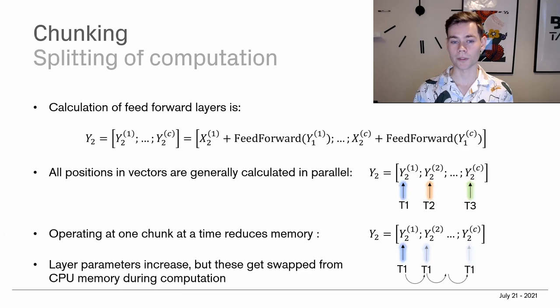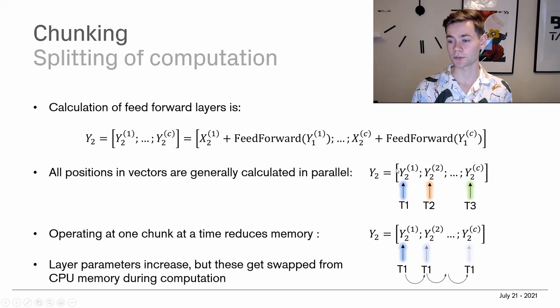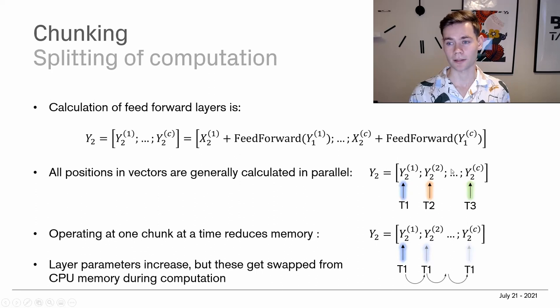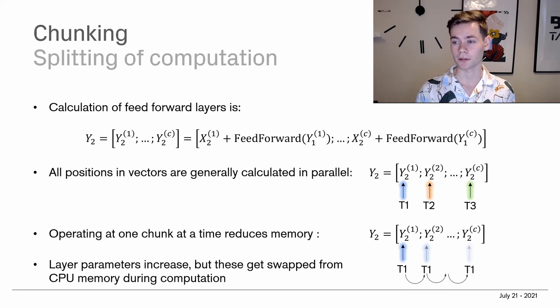The last step is splitting up computation — how feedforward layers are calculated. Normally, a feedforward layer's components can be calculated in parallel across threads to increase efficiency. However, if you chunk this and use the same thread for each calculation sequentially, you sacrifice some computational efficiency but increase memory efficiency. For processing large text sequences, memory efficiency is really key, and this is where current models tend to fall short.